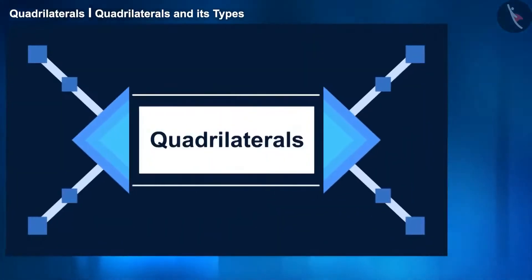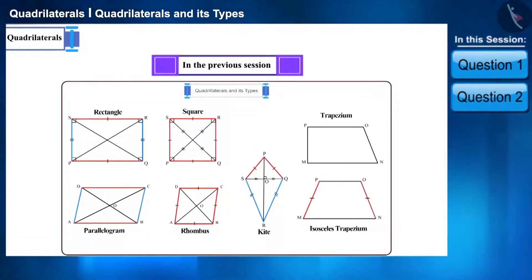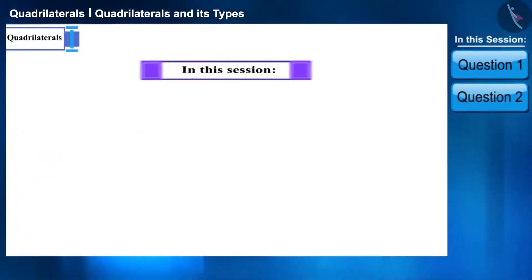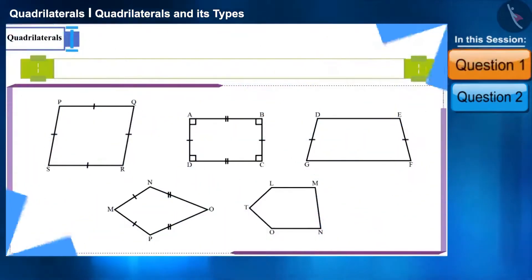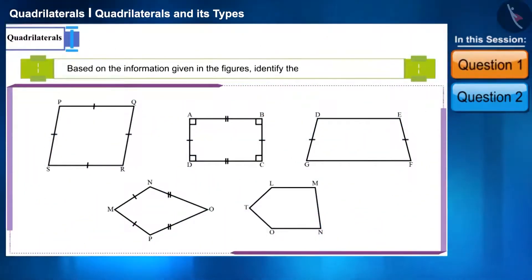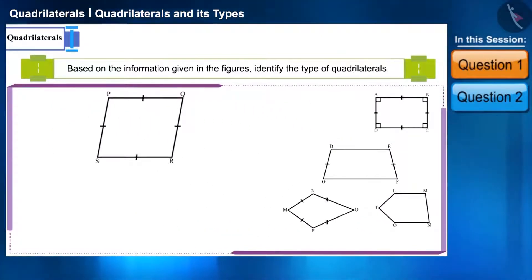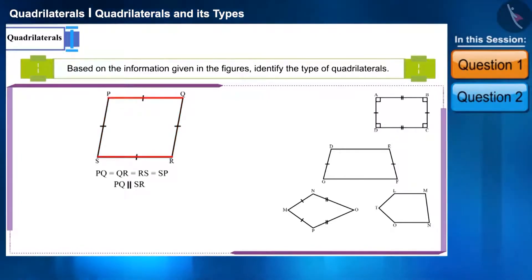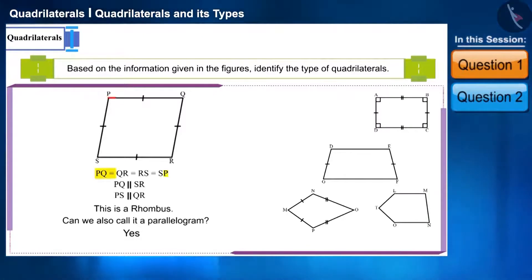Hello friends, welcome to this session on quadrilaterals. In the previous session we learned about quadrilateral and its types. Today we will solve some questions related to the same. Based on the information given in the figures, identify the types of quadrilaterals. Look at the first quadrilateral PQRS — its four sides are equal and both pairs of opposite sides are parallel, therefore PQRS is a rhombus. We can also call it a parallelogram, because a rhombus is a parallelogram whose all sides are equal.